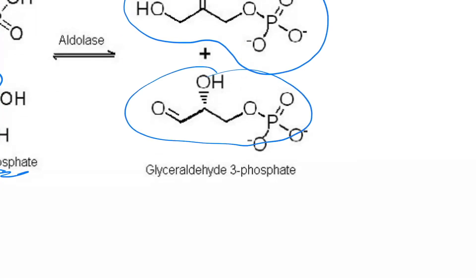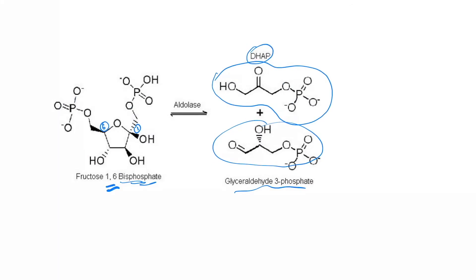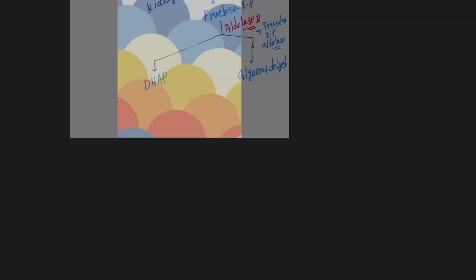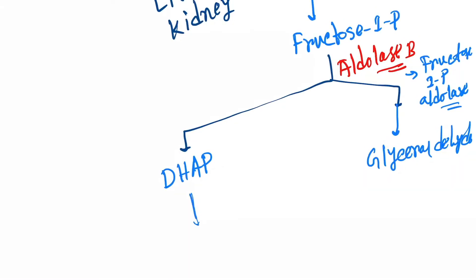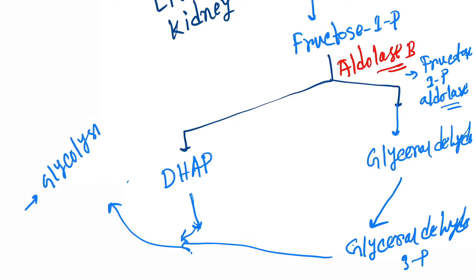And this compound is called glyceraldehyde 3-phosphate. Then DHAP, that is dihydroxyacetone phosphate, and glyceraldehyde will form glyceraldehyde 3-phosphate, and both these two things will participate in glycolysis, glycogenesis, and gluconeogenesis.